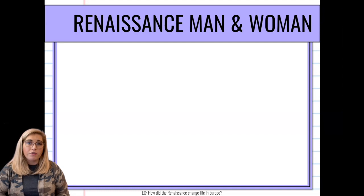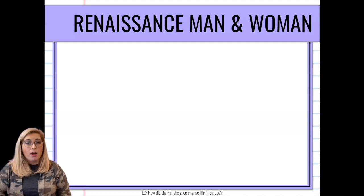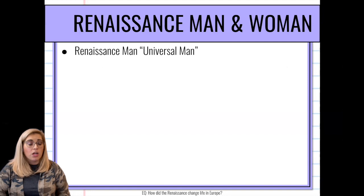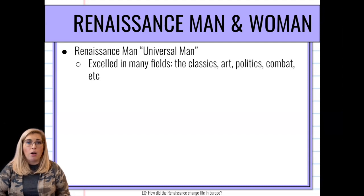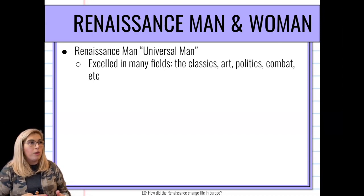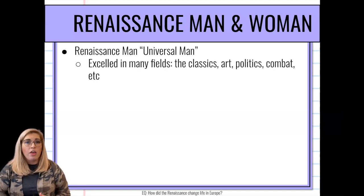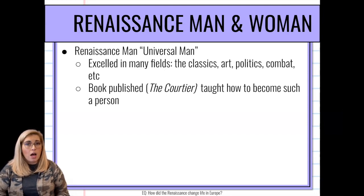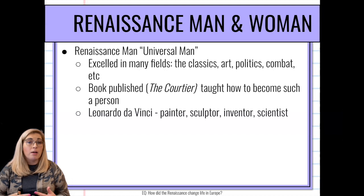During this time period, we have the phrase Renaissance man and woman. A Renaissance man is a universal man — instead of just knowing how to do one thing, he excels in many fields. He reads, writes, paints, writes poetry, and is well-versed in politics and combat. He's charming, witty, and a jack of all trades. A lot of this comes from a book called The Courtier, which teaches a person how to become a Renaissance man.